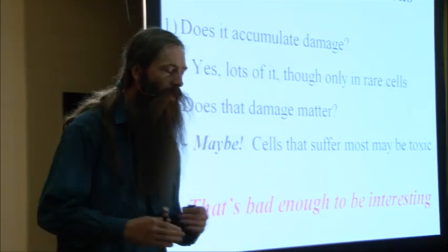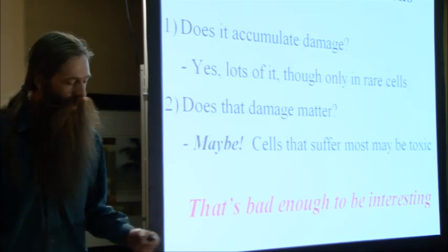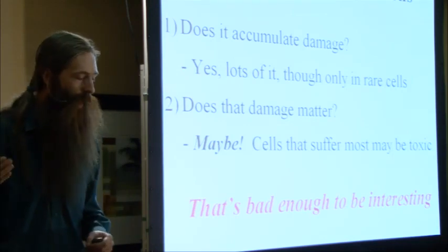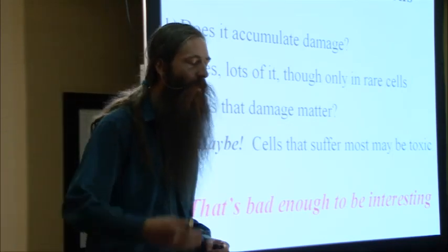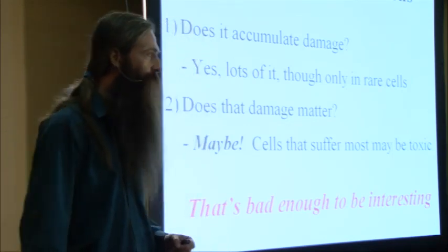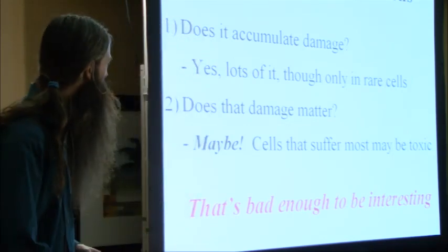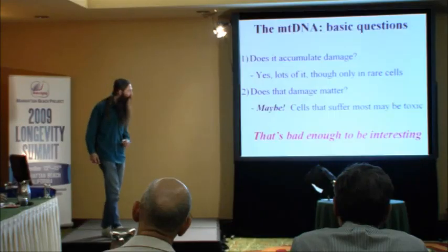Interestingly, mutations accumulate non-uniformly across tissue. We see a lot of them in a few cells and almost none of them in the rest of our cells. The big question is: does this actually contribute to age-related ill health late in life? That's still a really controversial question within the study of the biology of aging.